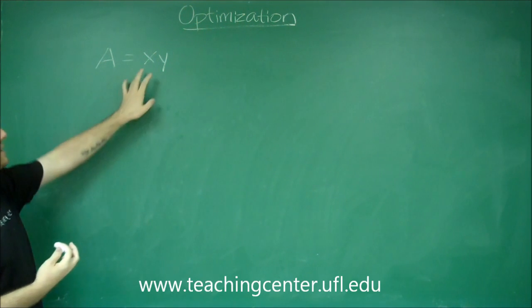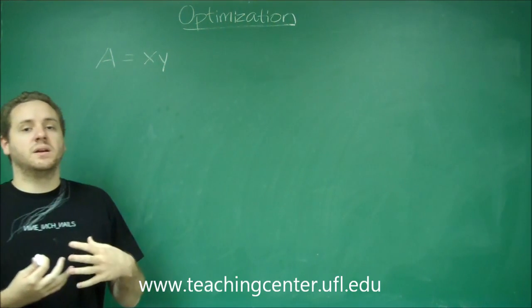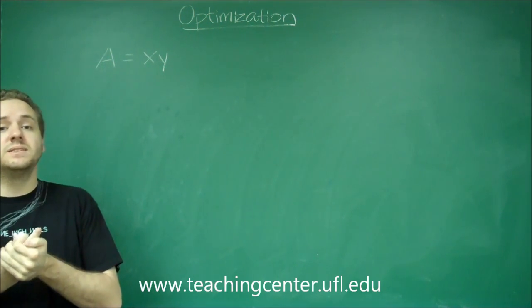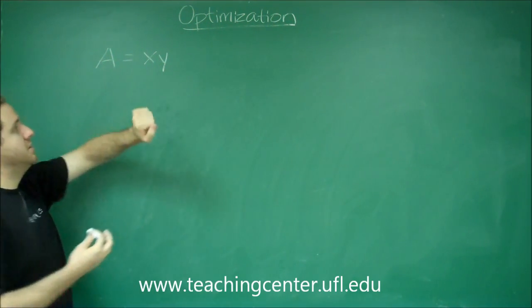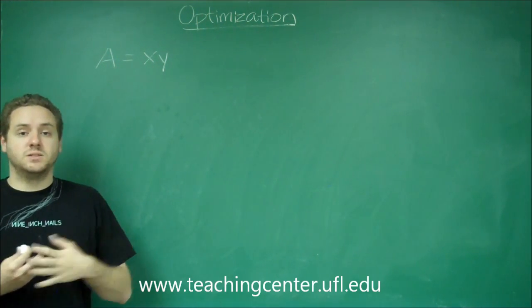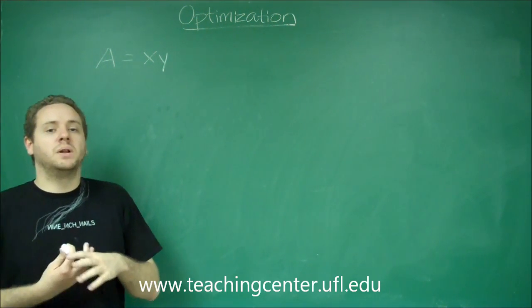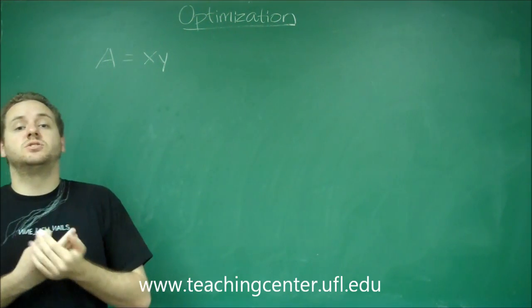However, x and y are two different variables, and I would not be able to do that right now because I have two different variables. If this is the case in your optimization problem, when you make the equation that you're trying to maximize or minimize and it has multiple variables, there's more information in the problem that would allow you to have a constraint formula.